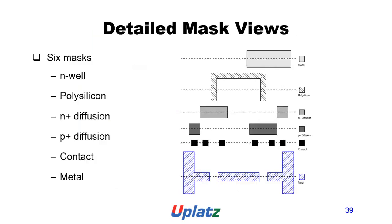Detailed mask layers: six masks are used — N-well, polysilicon, N-plus diffusion, P-plus diffusion, contact, and metal.